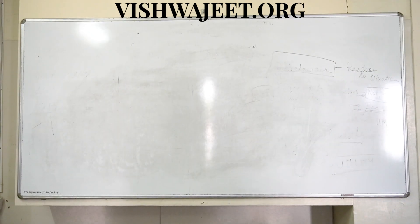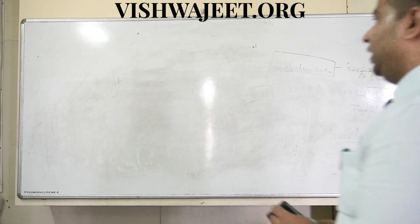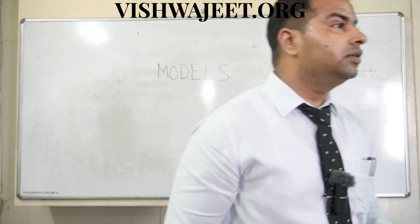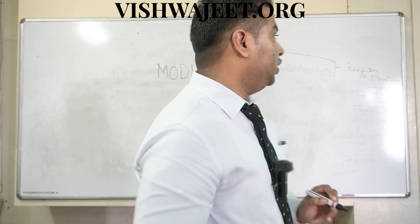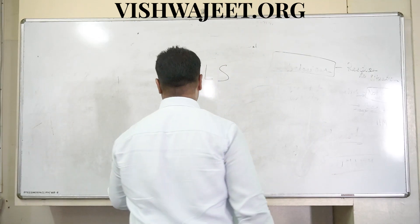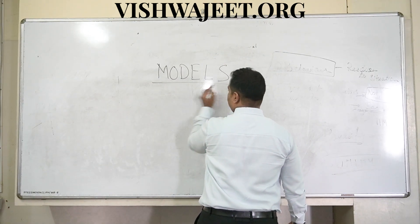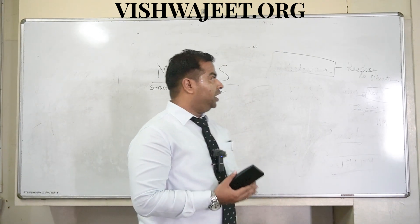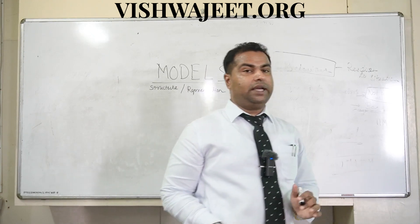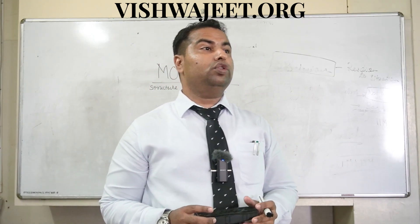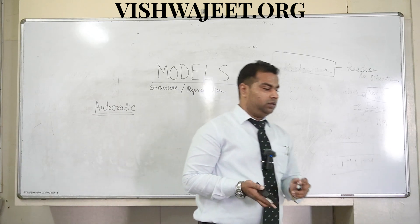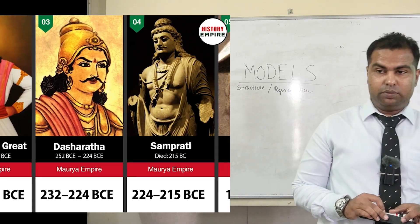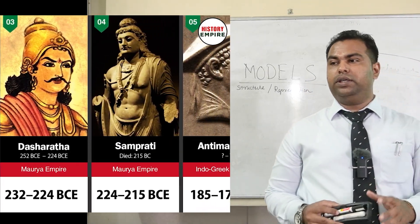A model is the structure and representation of something. We are talking about structure and representation. Now we have various types of organizational behavior models. Let's start with the autocratic model, which could be considered the most ancient model of organizational behavior.